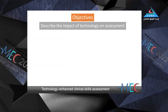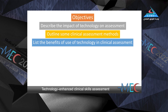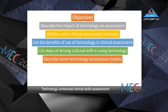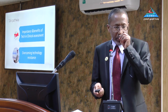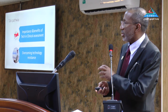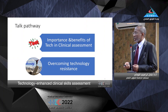We'll start with the objectives of the talk. By the end of this presentation you will be able to describe the impact of technology on assessment, outline some clinical assessment methods, list the benefits of use of technology in a clinical assessment, list the steps of driving cultural shift in using technology, and describe some technology acceptance models. The talk will be in two major lines: the first focusing on the importance and benefits of technology in clinical assessment, and the second on how to overcome technology resistance.